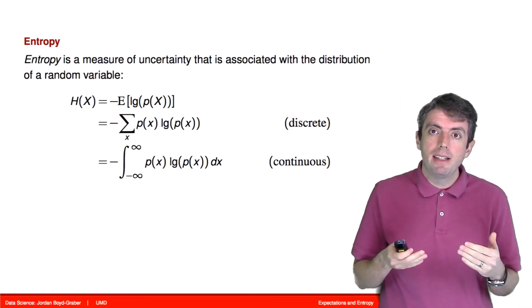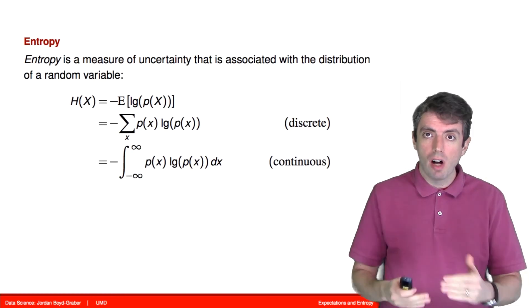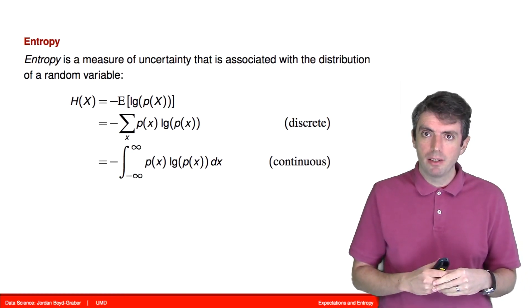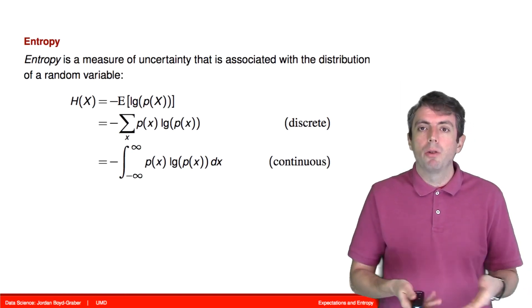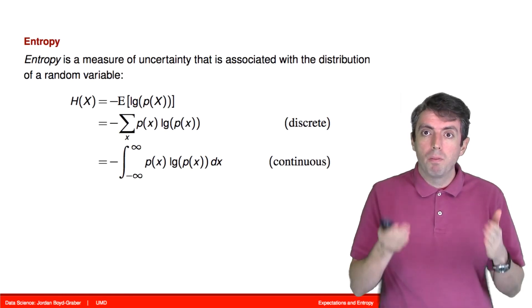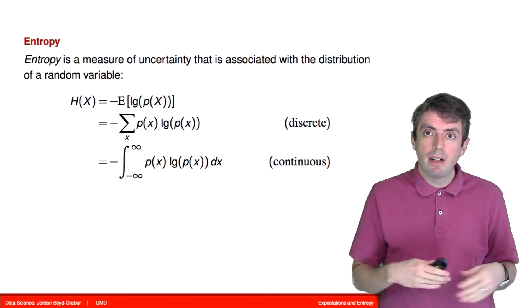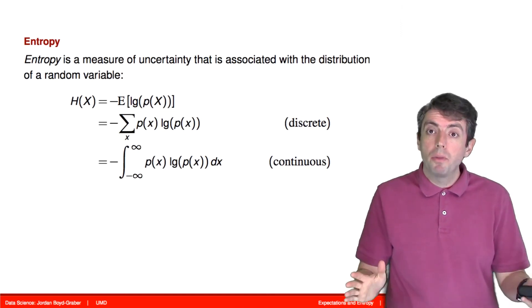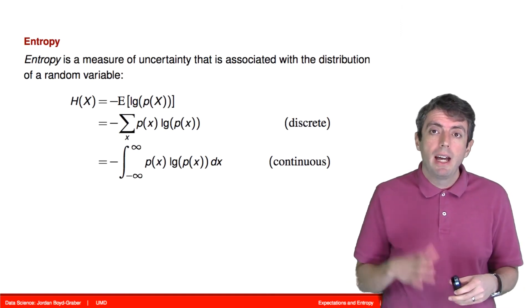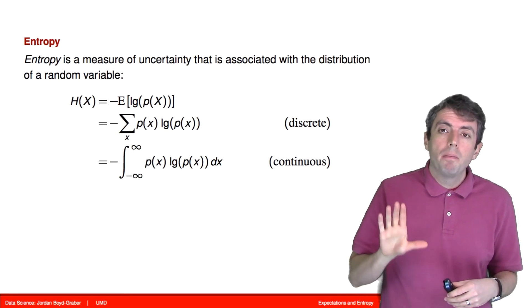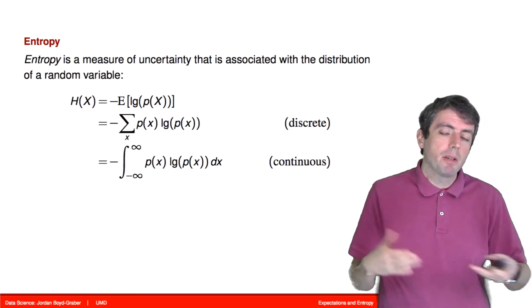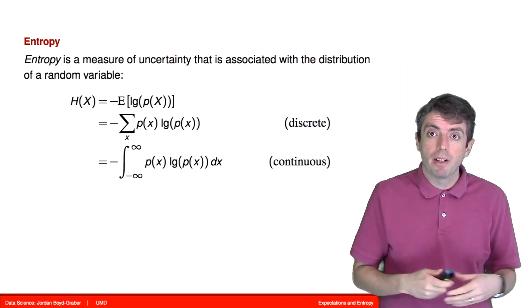Entropy is the negative expectation of the log of a probability distribution. If you plug that into either a discrete or continuous distribution, you get the following formula. We'll see more examples of entropy as we go through the course, but hopefully you can start to see some of the properties that the entropy function will have.